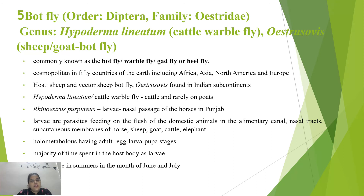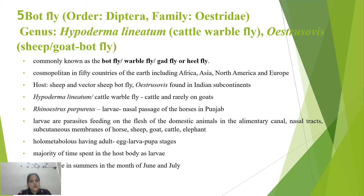The next vector is the botfly, belonging to order Diptera and family Oestridae, with genera including Hypoderma lineatum (cattle warble fly) and Oestrus or Stravia (sheep/goat botfly). Commonly called botfly, warble fly, cat fly, or heel fly, they are cosmopolitan in 50 countries including Africa, Asia, North America, and Europe. Hosts include sheep, cattle, elephants, horses, and goats. Adults are not harmful to animals, but larval stages act as parasites feeding on the flesh of domestic animals.